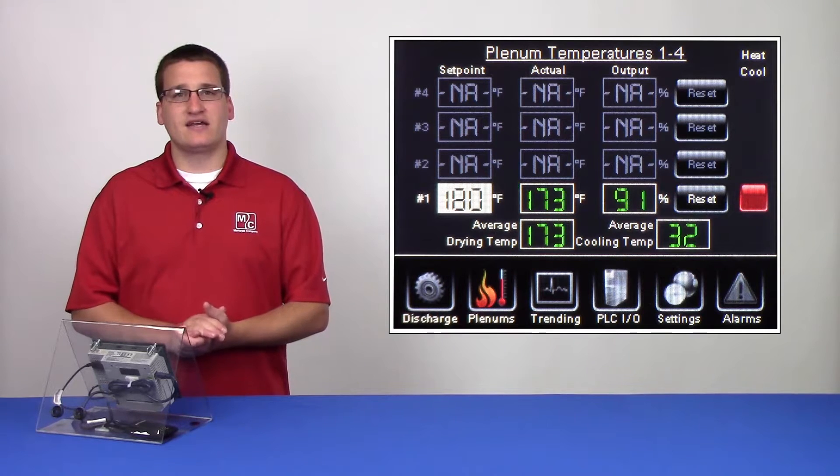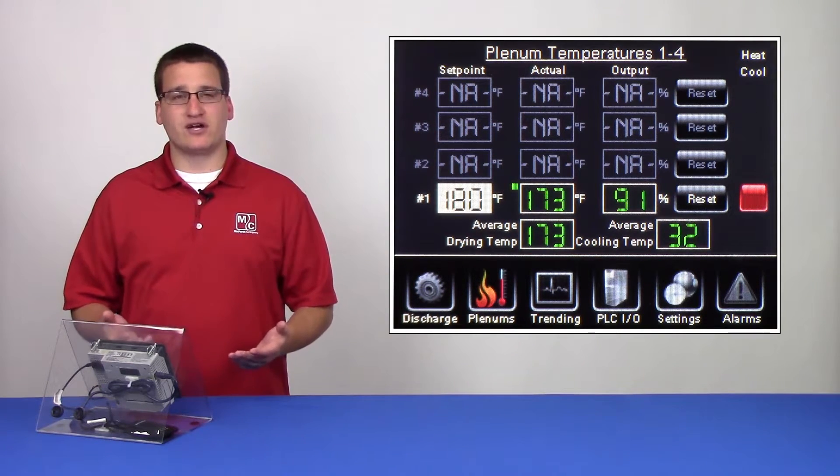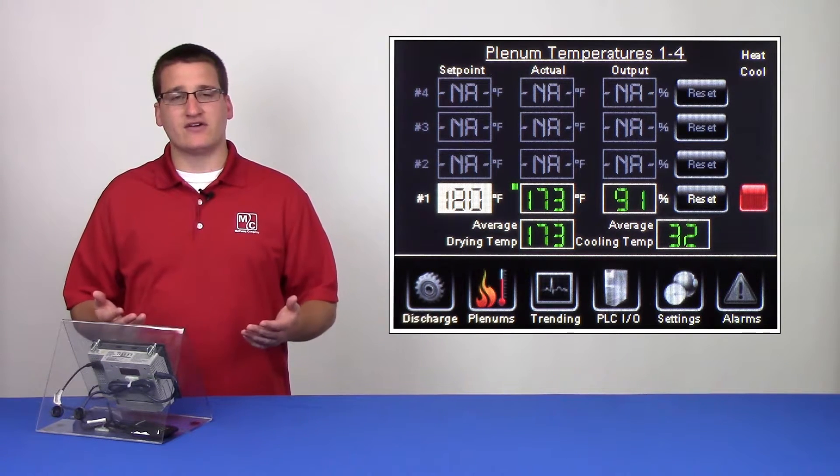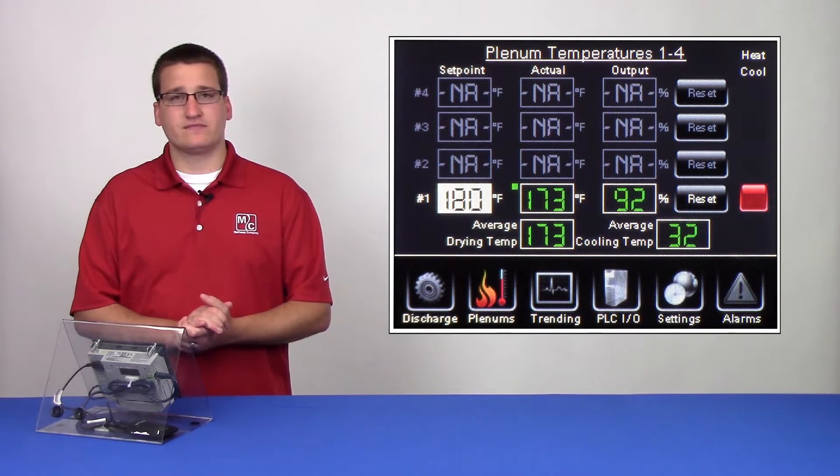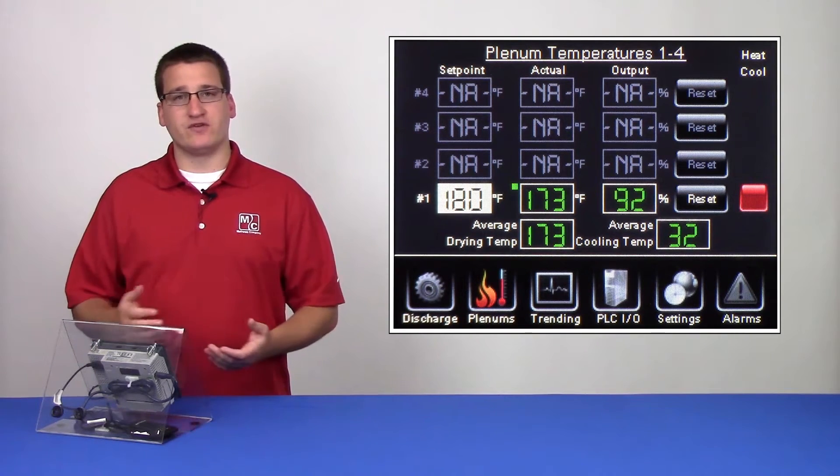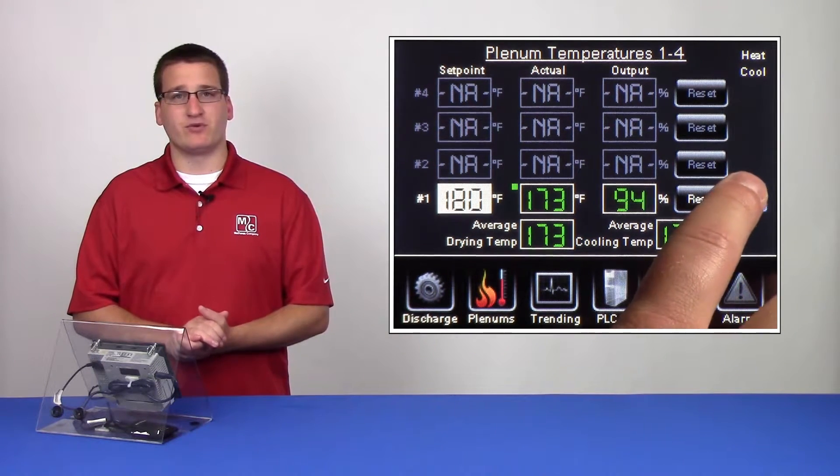Along the right hand side, we see the heat cool indicators. On profile dryers, it's very important to maintain these indicators accurate to what you're currently running. The dryer will use this to calculate how it should run. If you need to toggle these from heat to cool, you can tap on the box and it will change from red to blue.